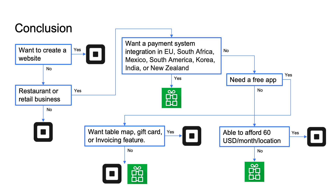Let's make a conclusion on this video. The choice of whether you should use Square or Royverse can be determined like this: If you want to create a website, you can use Square. And if you are not a restaurant or retail business, Square could still be your best option. If you are in the EU, South Africa, Mexico, South America, Korea, India, or New Zealand, and you want to use an integrated payment gateway with a POS, this is what only Royverse can support — in such a case, you need to use Royverse.